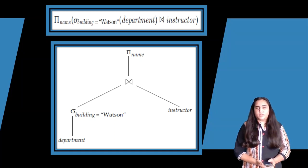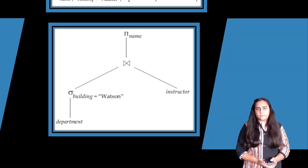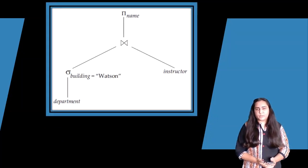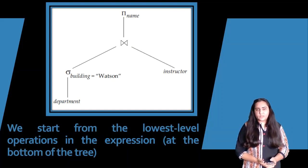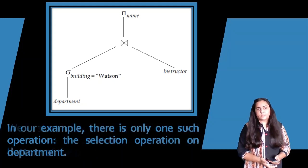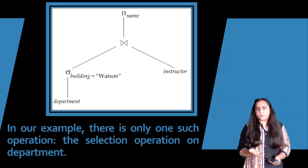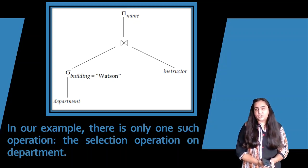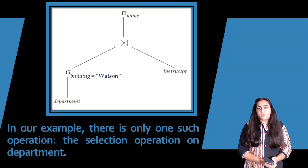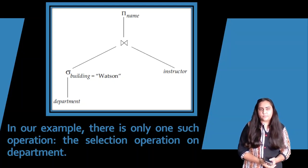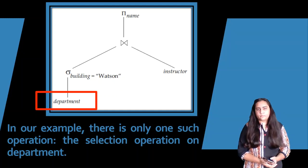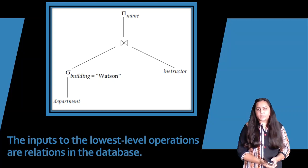So we're going to go ahead and understand how these expressions are evaluated. The first way to evaluate such expressions is to apply the materialization approach. This approach works by starting from the lowest level of operations in the expression, that means at the bottom. At the bottom you can see the expression that is there is department. This is not always true — it depends on the type of query and the tree generated. The inputs to the lowest level operations are relations in the database.